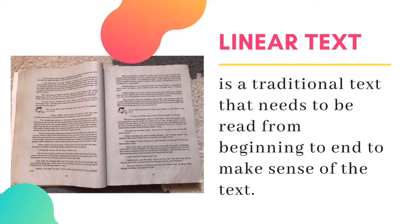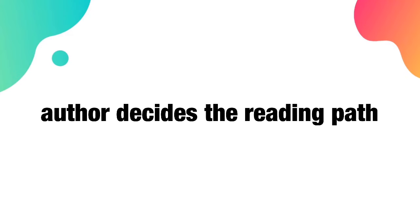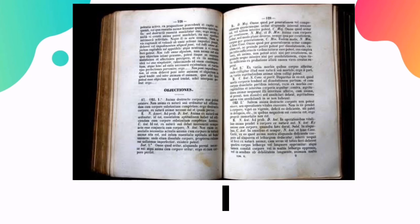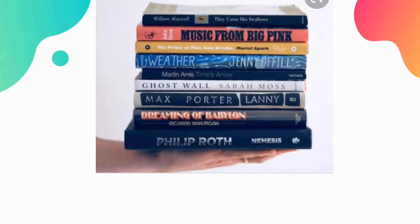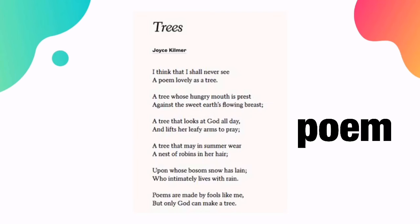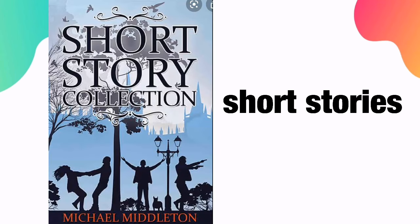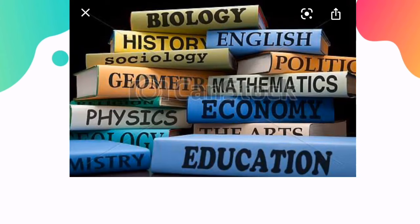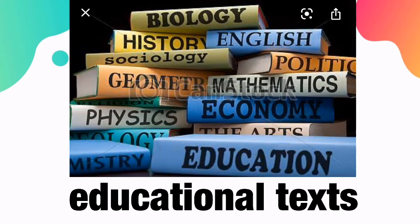In a linear text, a reader can make sense of the text by reading sequentially — from beginning to the end. It's typically the author of the text who decides the order of the text or its reading path. Generally, texts printed on paper are considered linear texts. Other examples are novels, poems, short stories, letters, and educational texts.